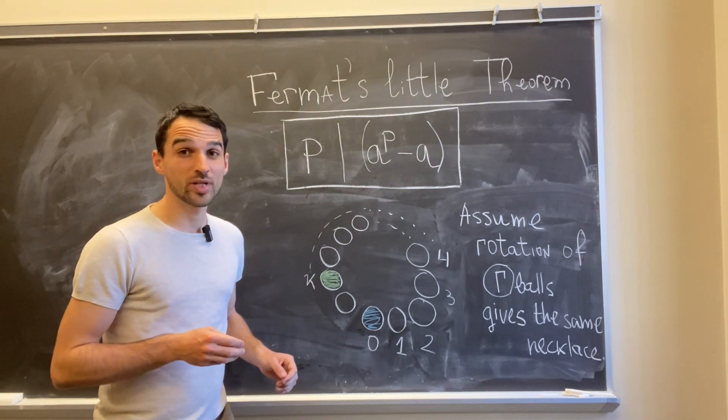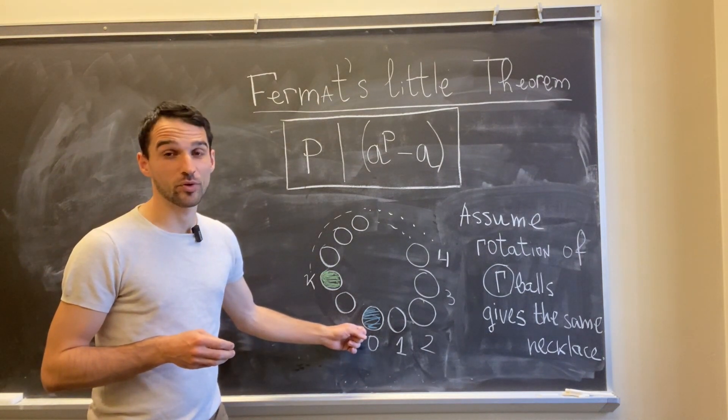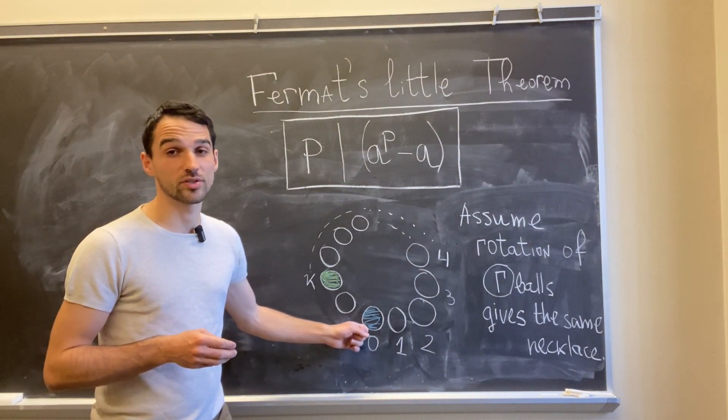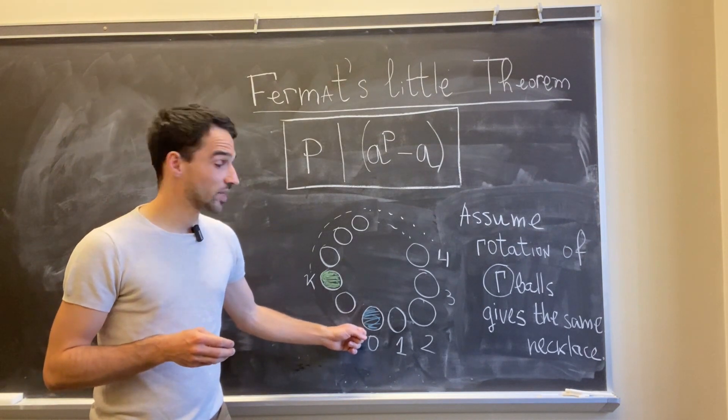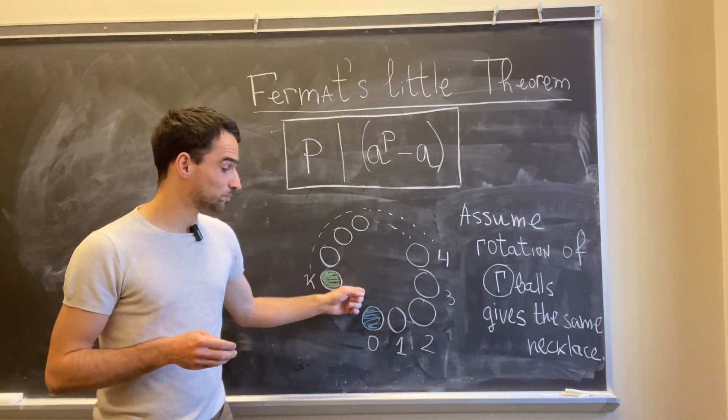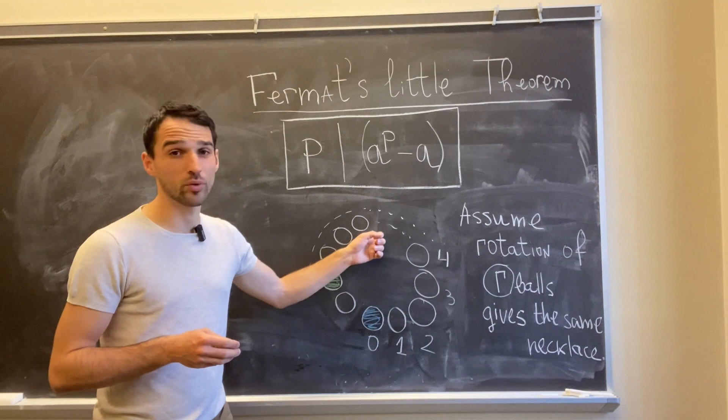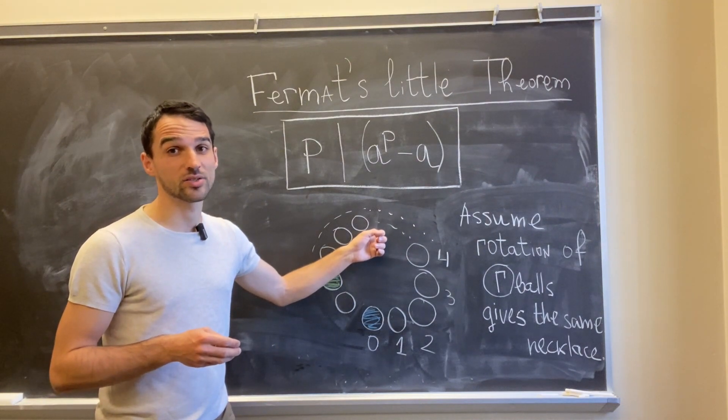So what does this mean? This means that, okay, if, for example, the color of my ball 0 was blue, then after the rotation, I'm getting the same necklace. So the ball with color r is also blue.